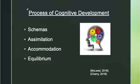The process of cognitive development starts with a schema, which describes both the mental and physical action involved in understanding and knowing. Schemas are categories of knowledge that help us to interpret and understand the world. This includes both a category of knowledge and the process of obtaining that knowledge.